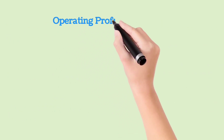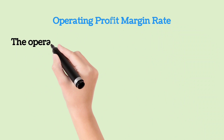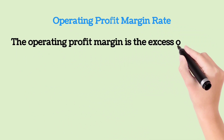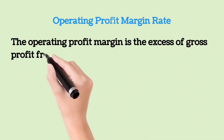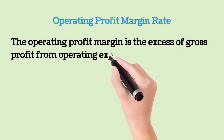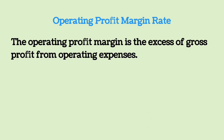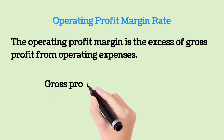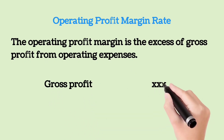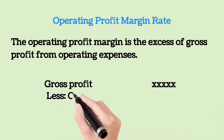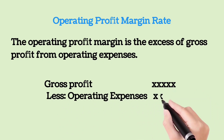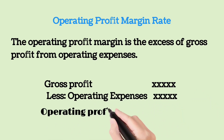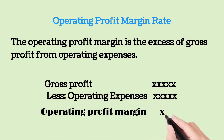Operating Profit Margin Rate. The operating profit margin is the excess of gross profit from operating expenses. The formula is: gross profit less operating expenses equals operating profit margin.